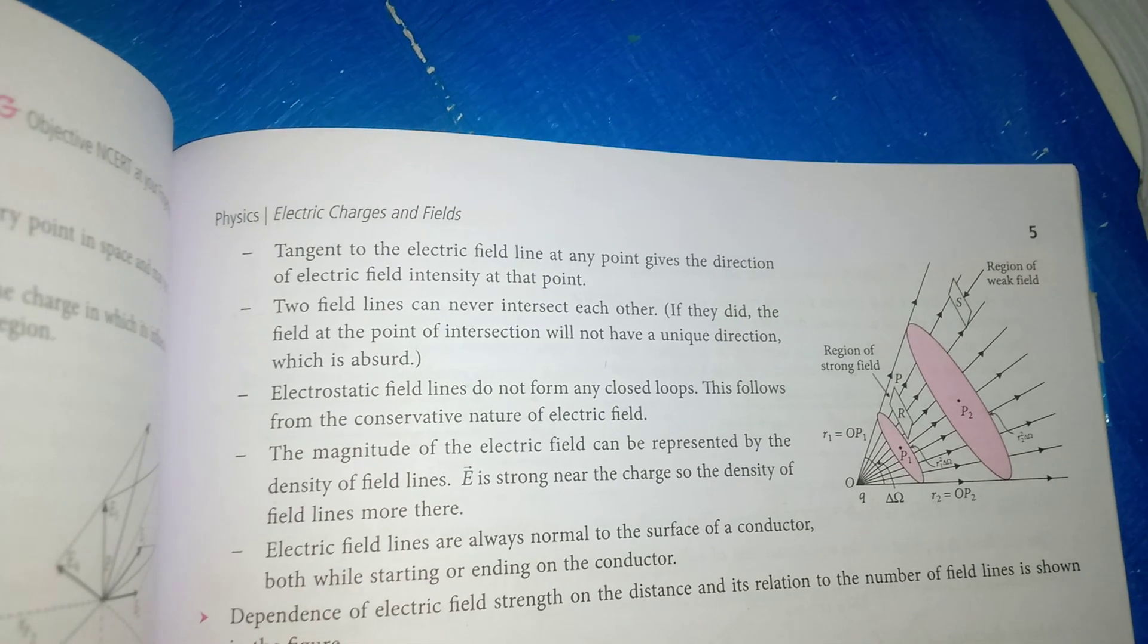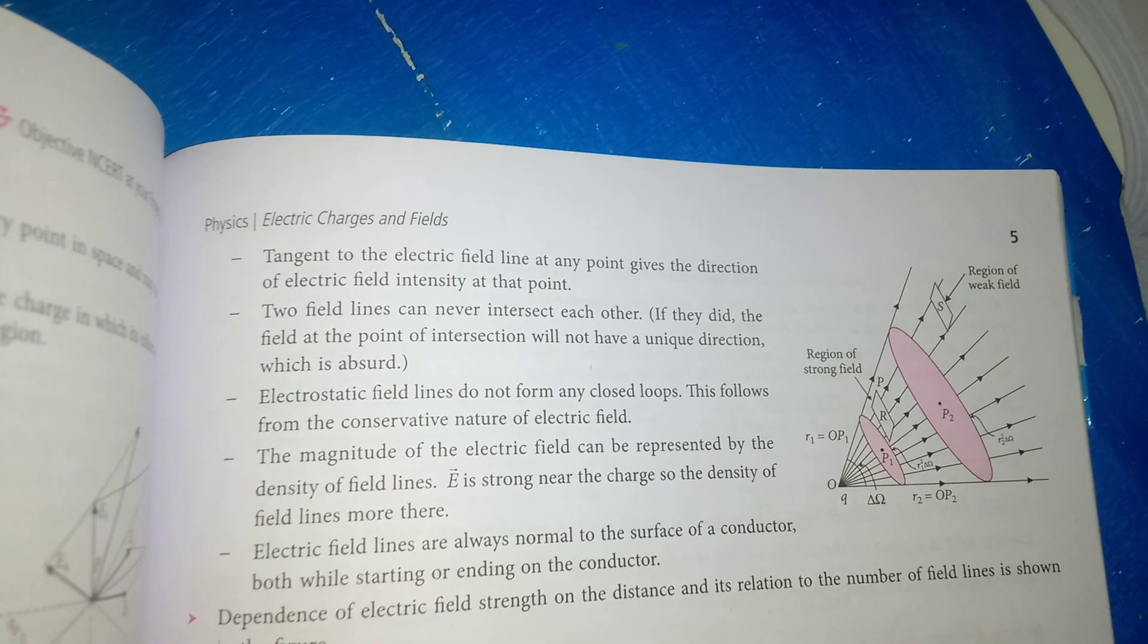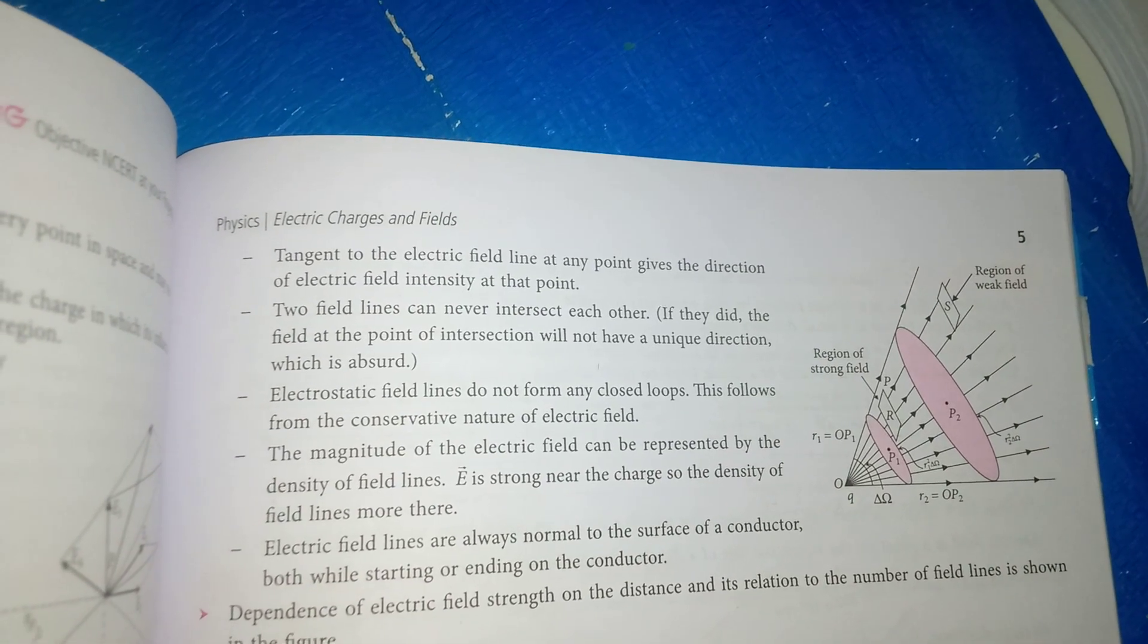Electrostatic field lines do not form any closed loops. This follows from the conservative nature of electric fields.